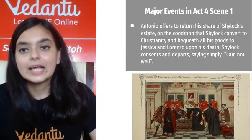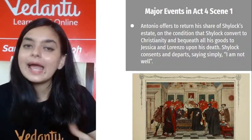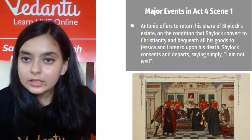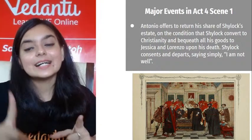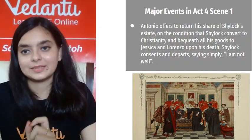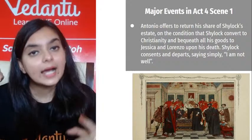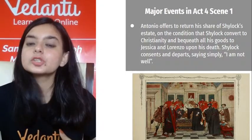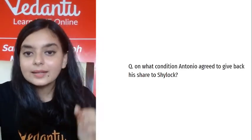The Duke spares Shylock's life and demands only a fine rather than half his estate. Antonio also offers to return Shylock's estate, but only on one condition: that Shylock convert to Christianity. Although Antonio is showing mercy, he is taking away something from Shylock — his religion. To what extent is this forced conversion justified? That is a point to debate.